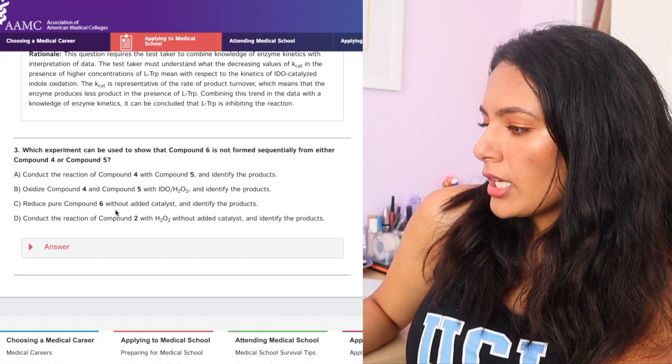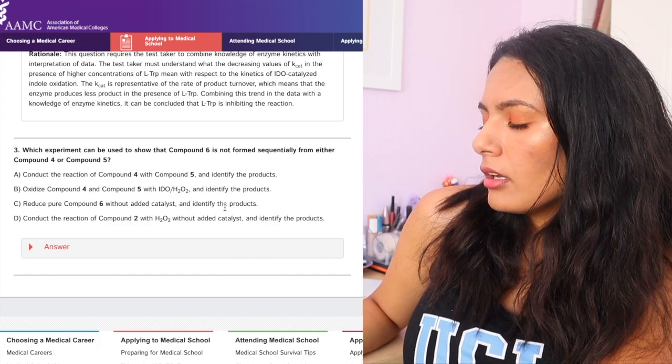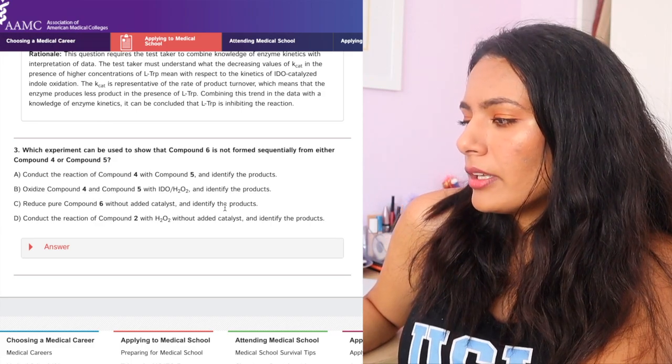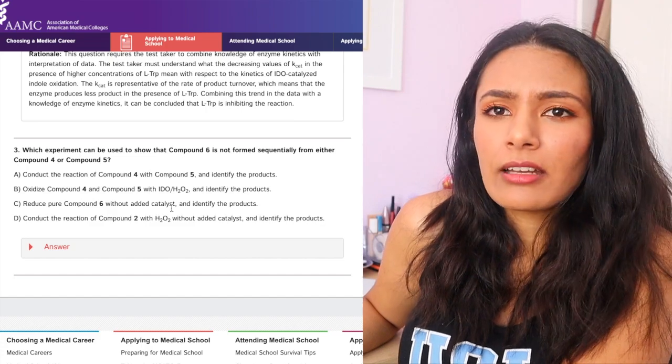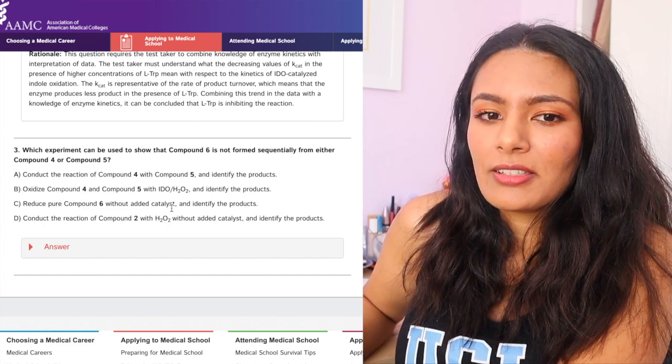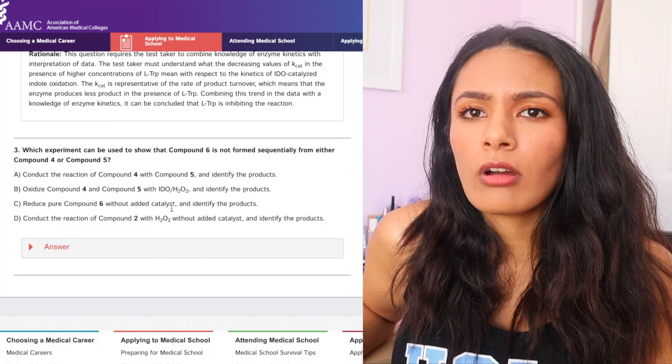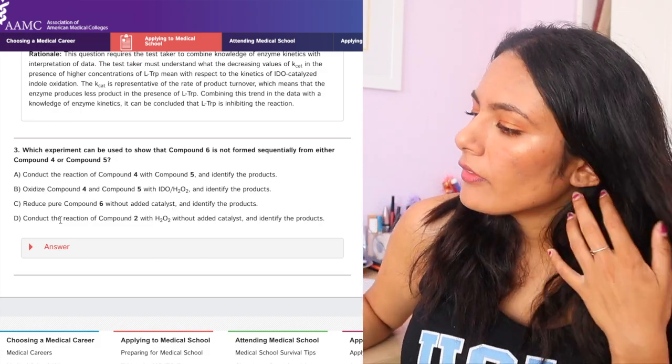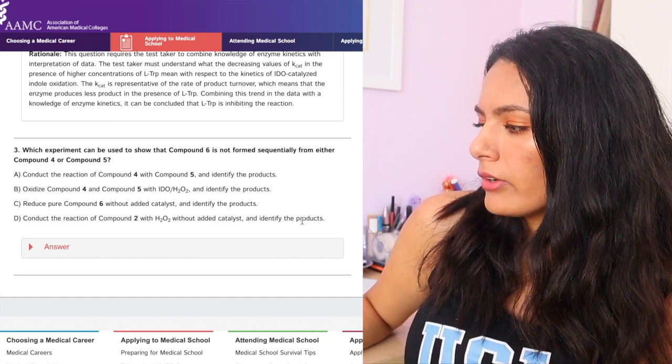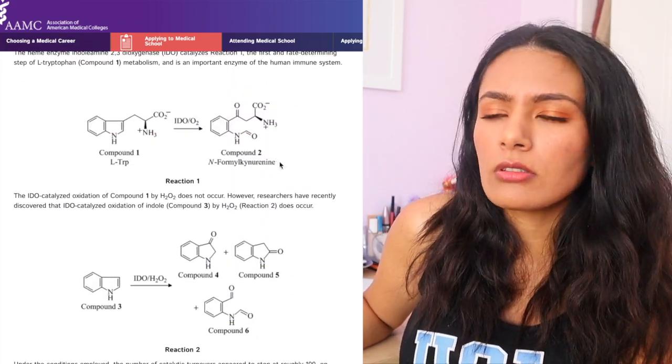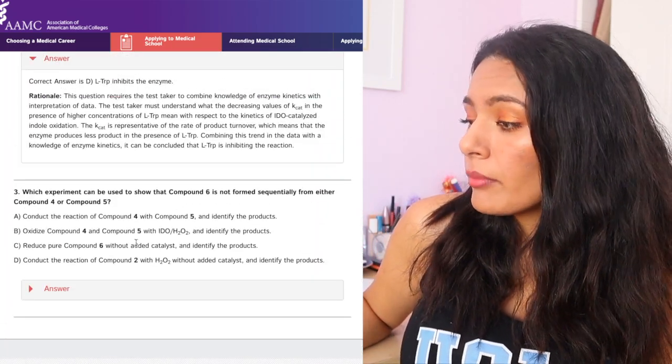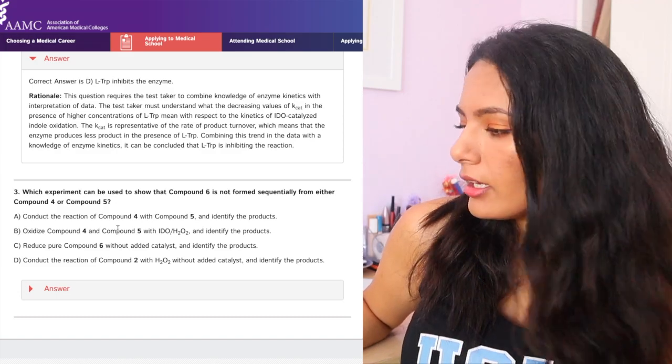Reduce compound six without added catalyst and identify the products. I don't really know why you would want to reduce compound six and identify the products, especially without the added catalyst. That doesn't really make sense because it's an IDO catalyzed reaction. You want that enzyme in there. And also it would be much easier to just oxidize than go back and reduce if it's an oxidation reaction. So in my head, that doesn't really make sense. And then D says, conduct the reaction of compound two with H2O2 without added catalyst and identify the products. Compound two is in a completely different reaction. So that doesn't really even make sense. So D also doesn't sound like an answer that would make sense. So I'm going to go ahead and say B and let's see if that's the right answer.